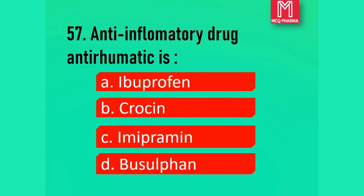Question number 57. Anti-inflammatory, anti-rheumatic drug is: Option A, Ibuprofen. Option B, Chlorzine. Option C, Imipramine. Option D, Busulfan. Correct answer: Option A, Ibuprofen.